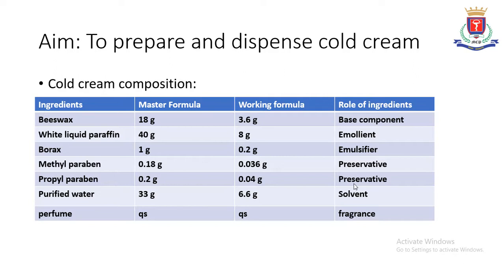Purified water is included since it is a W/O emulsion and the internal phase is water. We also add perfume. This formula has been calculated for 100 grams, and we will be preparing 20 grams, so the formula has been scaled accordingly. In this formula, white liquid paraffin and beeswax form the oil portion, that is the oily phase.